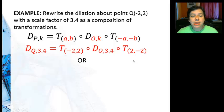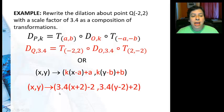The other way I can write it is where I'm going to use again this form where I have the k and the a. And it's going to be 3.4 times (x + 2 - 2) and 3.4 times (y - 2 + 2).